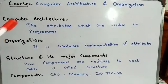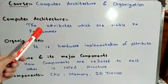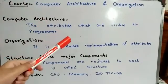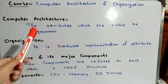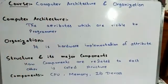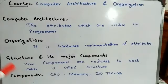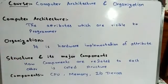What is computer architecture? The attributes which are visible to the programmer are called computer architecture.